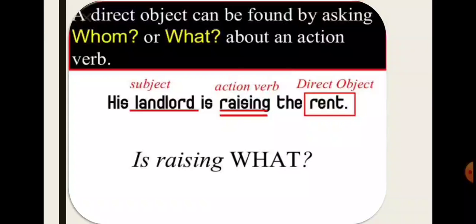To find out the direct object, let's put a question by asking what. What is his landlord raising? The answer will be rent. So here rent is a direct object.